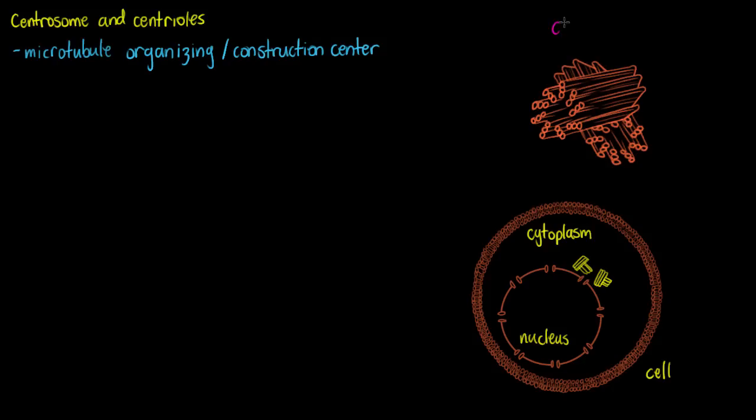Now if we zoomed into these centrosomes that are within our cell, we're going to find that it will look something like this. So it's this fairly odd looking star shaped structure that there are two of grouped together. And we call the individual units of the centrosome centrioles. So each one of those star like structures is called a centriole.